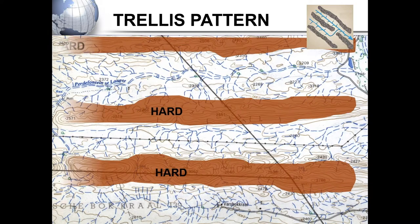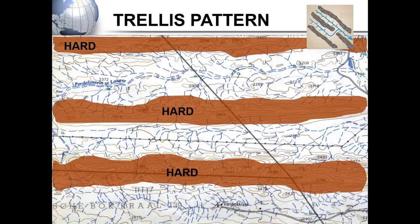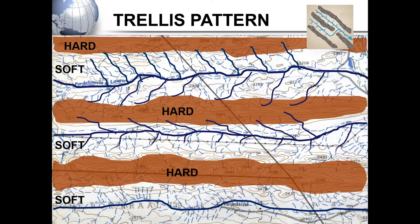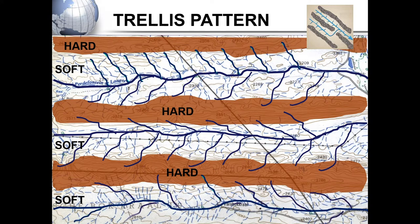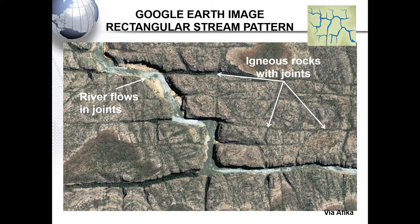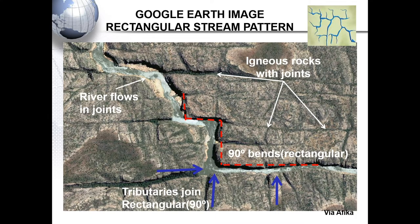That will be our trellis pattern. Let's have a look at a Google Earth image of a rectangular stream pattern. You can see the igneous rocks with their joints, the river flowing in those joints, and the 90-degree bends. Our tributaries are also joining at a 90-degree angle.